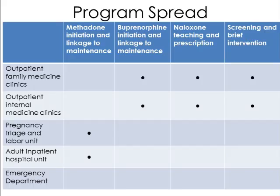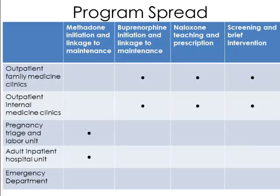About five years ago, we were providing buprenorphine maintenance in the family medicine and internal medicine clinics. We were prescribing naloxone for overdose reversal to anyone receiving long-term opioids, and we were providing screening and brief intervention. We were also fortunate to have a methadone clinic on campus that allowed us to initiate methadone for hospitalized patients. So if a patient came to the hospital for endocarditis and wanted to stop injecting heroin, we had a protocol for a slow methadone induction in the hospital. The day before discharge, we would call the methadone clinic and let them know we had a new patient, and on the day of discharge they would take that patient in for intake that day — an incredibly smooth system, and a really good example of the kind of integration we need.